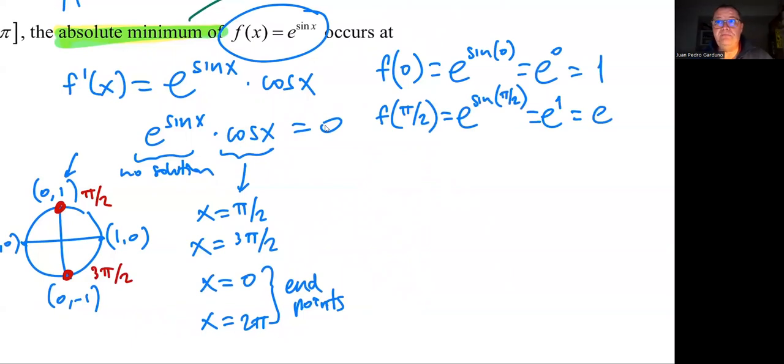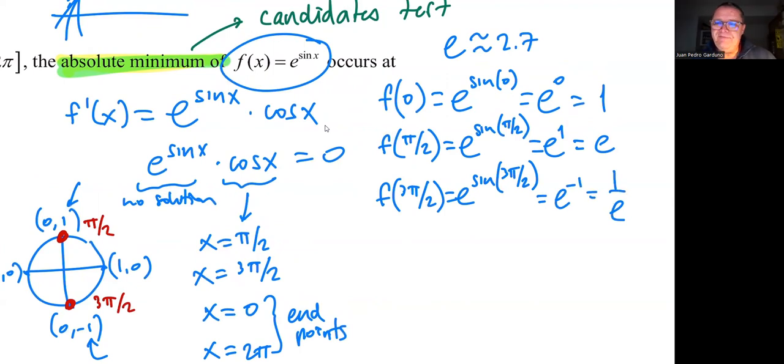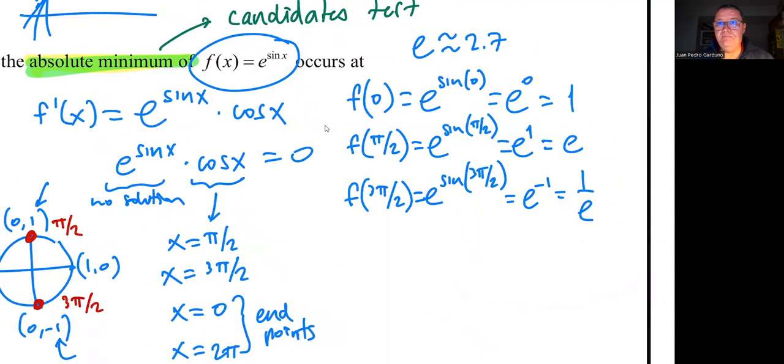It helps to remember that e is about 2.7. This is a no-calculator problem, so we need to know that e is approximately 2.7. Then we have f(3π/2). And that's going to be e^(sin(3π/2)). Now sine 3π/2 is the y value at 3π/2, which is -1. So e^(-1) means the same thing as 1/e. If I divide 1 over 2.7, that's going to be less than one. It's going to be like 0.4 maybe or something like that. So far, this one's winning as the minimum value.